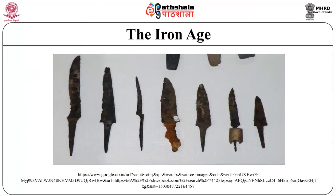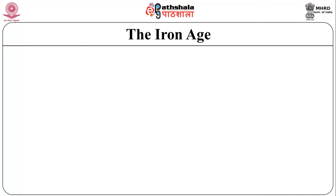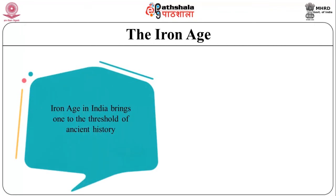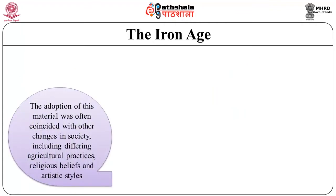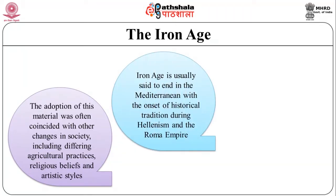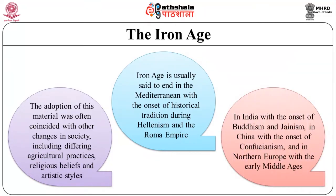This picture shows the different tools used during the Iron Age. The Iron Age in India brings one to the threshold of ancient history. In archaeology, the Iron Age was the stage in the development of any people in which tools and weapons whose main ingredient was iron were prominent. The adoption of this material often coincided with other changes in society including differing agricultural practices, religious beliefs and artistic styles. The Iron Age is usually said to end in the Mediterranean with the onset of the historical tradition during Hellenism and the Roman Empire, in India with the onset of Buddhism and Jainism, in China with the onset of Confucianism, and in Northern Europe with the early Middle Ages.